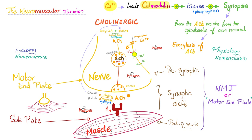Calcium is going to enter through this voltage-gated calcium channel. It will bind calmodulin, which will activate a kinase, which will phosphorylate synapsin. Synapsin is a protein at the synapse, at the axon terminalis. This will free the acetylcholine vesicles from the cytoskeleton, and now acetylcholine is free to exocytose and leave.